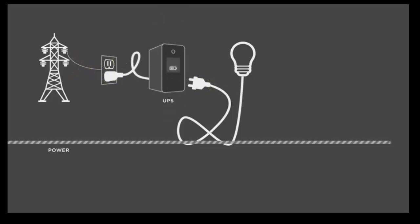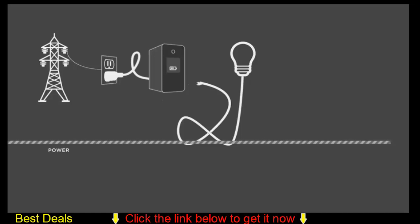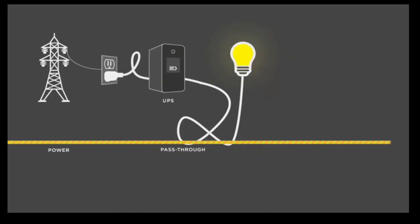Installation is simple: plug the UPS into a regular outlet, then plug the electric equipment into the UPS. When utility power is on, it passes through the UPS and goes to the equipment.